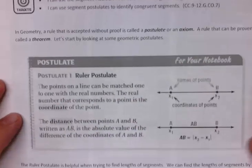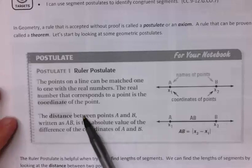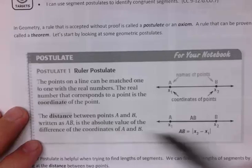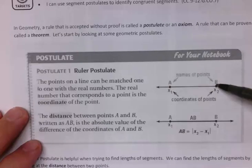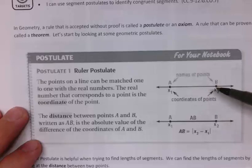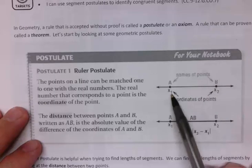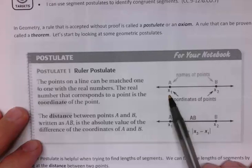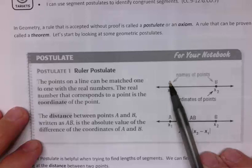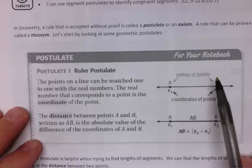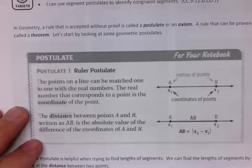Alright, here actually is the ruler postulate and to sum it up, it's basically just that every point that you have—any points you want, A, B, C, D, whatever—there's an x coordinate that you can match it up with one to one. So A has a specific x coordinate you can match it up with, B has a specific one, C, D, E, however many you've got.